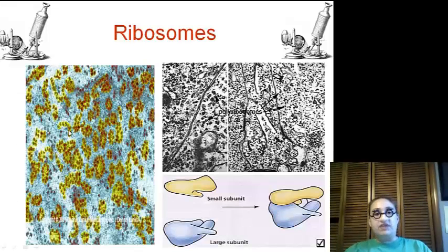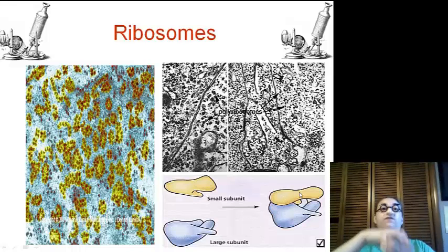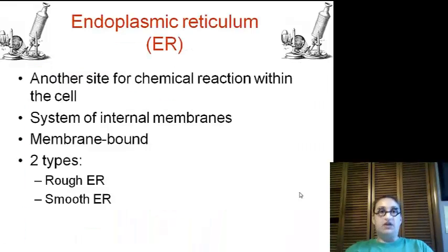So again, these are some that are attached here to the endoplasmic reticulum. And we have a small subunit and a large subunit that combine together to create the full ribosome. So the endoplasmic reticulum, that you will know as the ER, is another site for chemical reactions within the cells. There is a system of internal membranes, so they sort of look like a maze. And there's two types. There's the rough, that is speckled with ribosomes, which make it rough. And then there's the smooth, which is a series of internal membranes that do not have ribosomes.